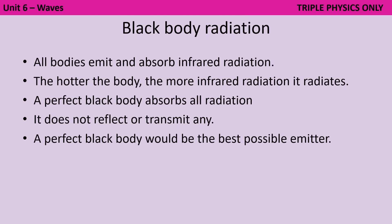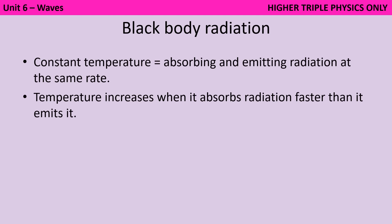All objects regardless of their temperature emit and absorb infrared radiation, and the hotter something is the more infrared radiation it radiates in a given time. A perfect black body is an object that absorbs all of the radiation incident on it and doesn't reflect or transmit any radiation. Since a good absorber is also a good emitter, a perfect black body would be the best possible emitter. The temperature of an object — even one as big as the earth — is a function of how quickly it's absorbing and emitting radiation. If it's doing both at the same rate it stays the same temperature; if it's absorbing more it heats up.